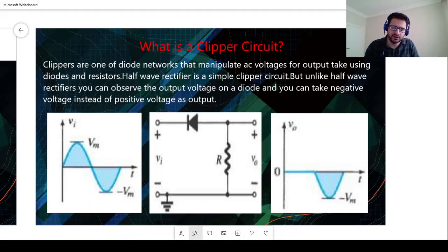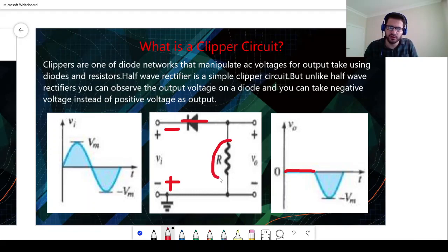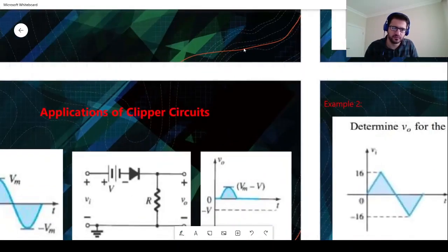For this clipper circuit, for the positive part we will just see an open circuit because of reverse bias — there is no current passing through the resistor and we will have zero voltage as output. For the negative bias, we have a voltage source and the diode will be short circuit, so all the voltage drop will occur on the resistor and we will reflect this part to the output voltage.